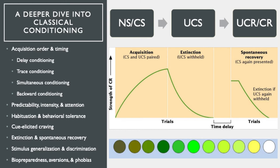Other factors that affect conditioning are predictability, intensity, and attention. Predictability refers to how likely the neutral stimulus signals the unconditioned stimulus — the more predictable, the stronger the association. For example, a dog who bites rarely will induce less fear than one who bites every time. Intensity describes how powerful the unconditioned stimulus is in triggering a response. Attention refers to what we're paying attention to when the unconditioned stimulus occurs — if you're stung by a bee while paying attention to a song on the radio, you might associate the pain with that song.